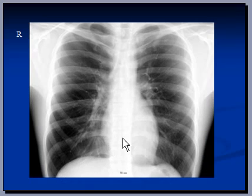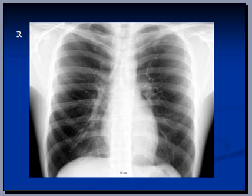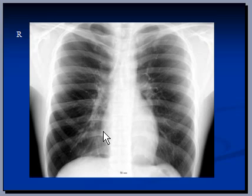Right and left heart borders are clearly visible. Right and left hemidiaphragms are clearly visible. Mediastinum is essentially normal in size and shape. Although lungs are a bit hyperinflated, they essentially look normal. Heart size is normal.